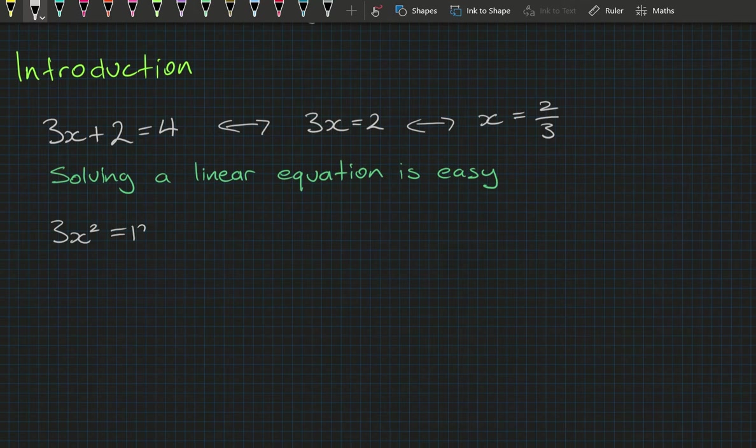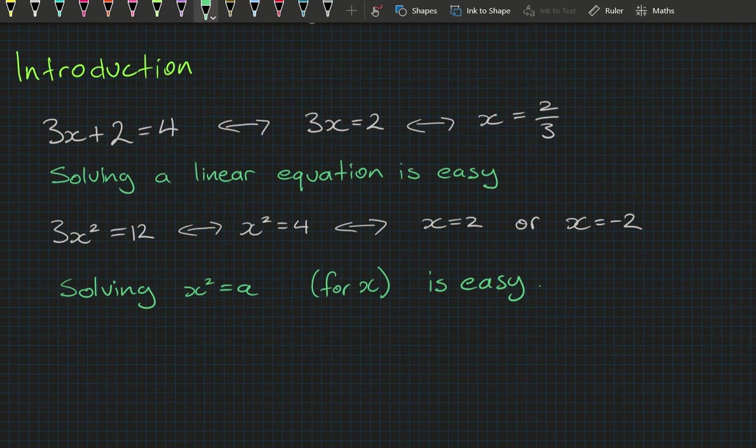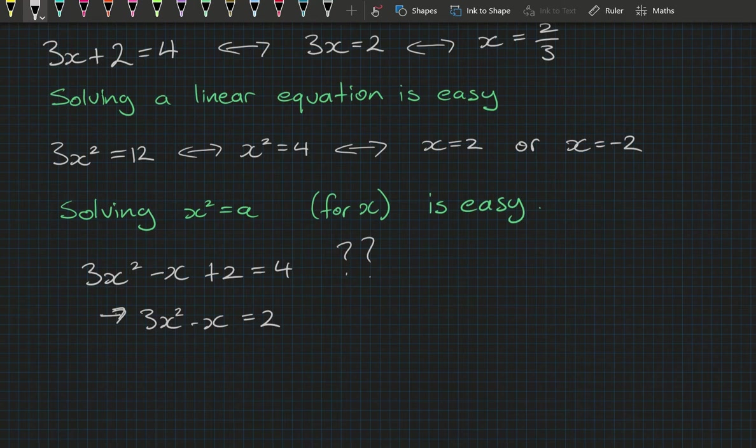After doing our surds unit, solving x squared equals a for x is pretty easy. But what about 3x squared minus x plus 2 equals 4? We could put all the numbers on one side to get 3x squared minus x equals 2, then divide by 3 to get x squared minus x over 3 equals 2 over 3. That doesn't really leave much confidence on where to go next.